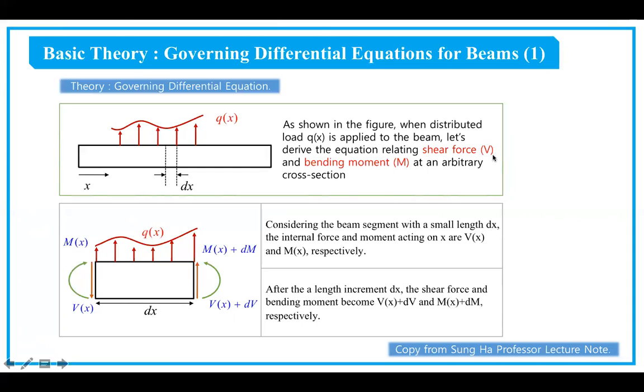We consider the beam segment with a small length dx, where the internal force and moment acting on x are V(x) and M(x), respectively. After we add an increment length dx, the shear force and bending moment become V(x) plus dV and M(x) plus dM.